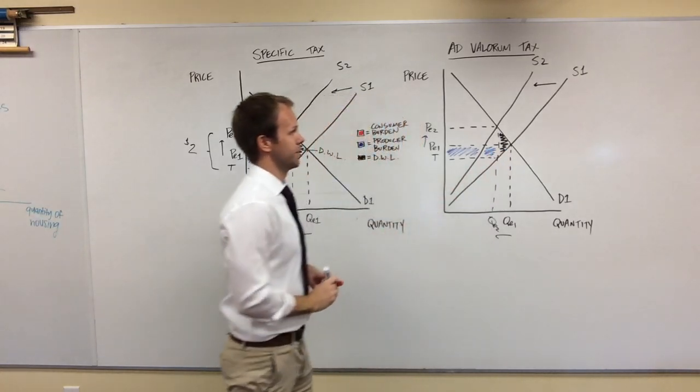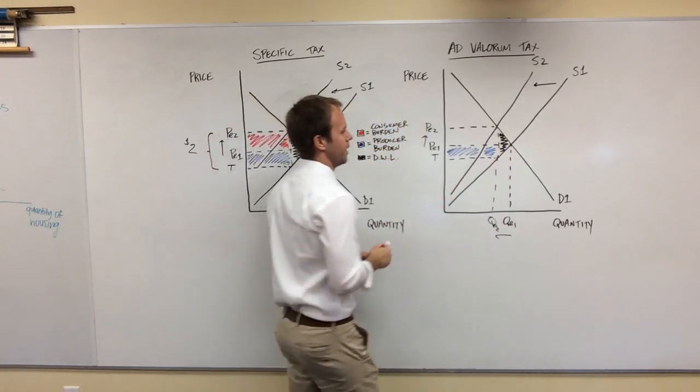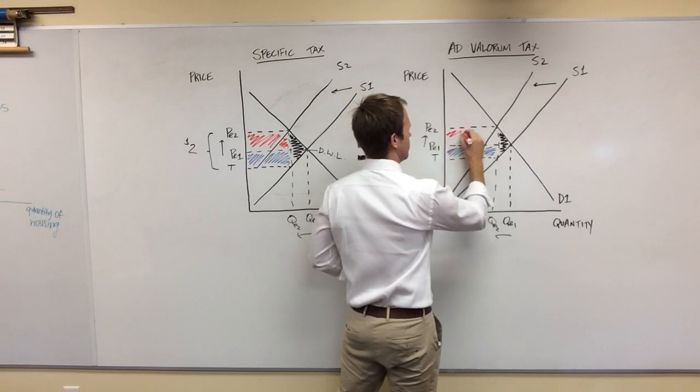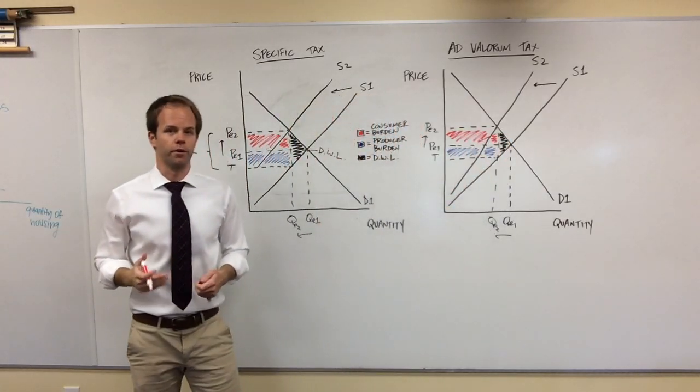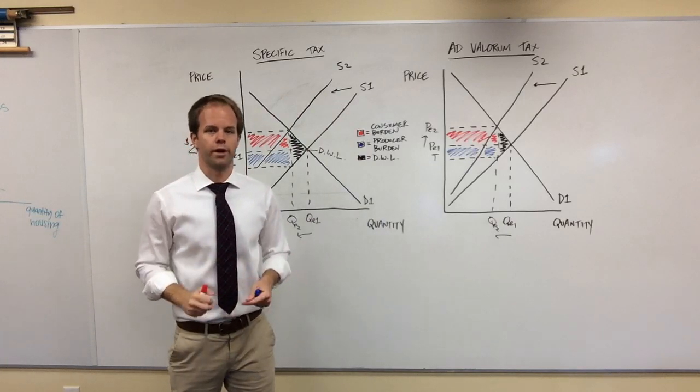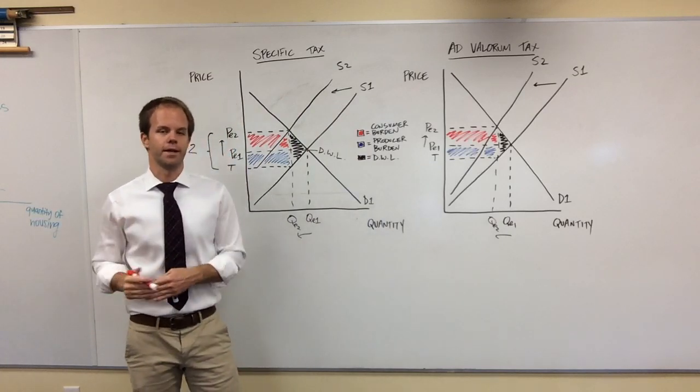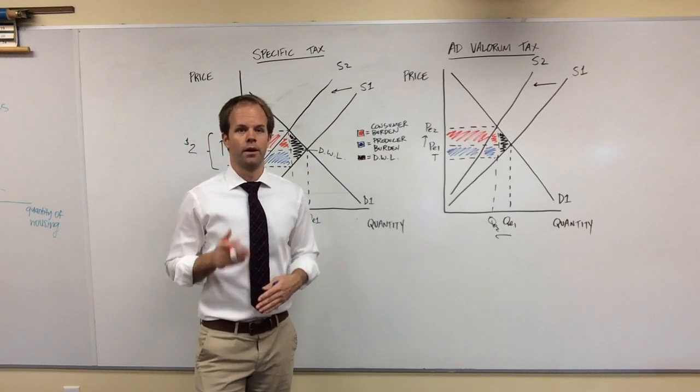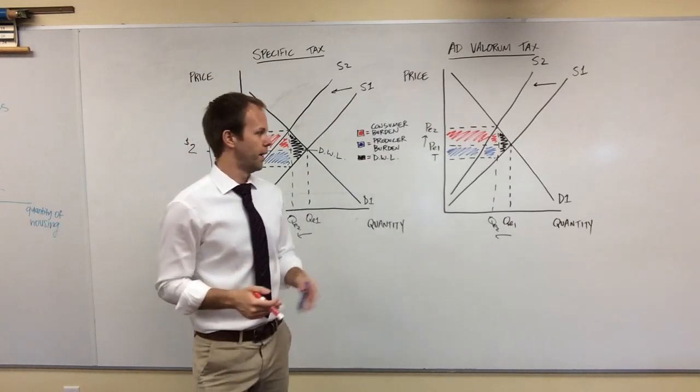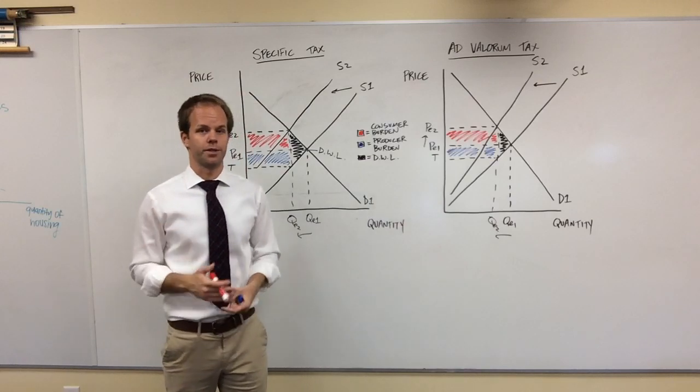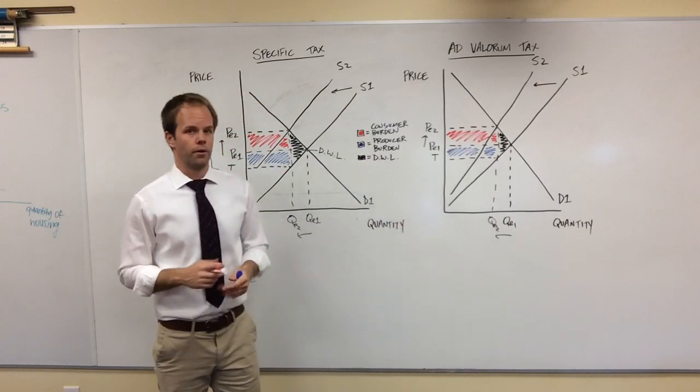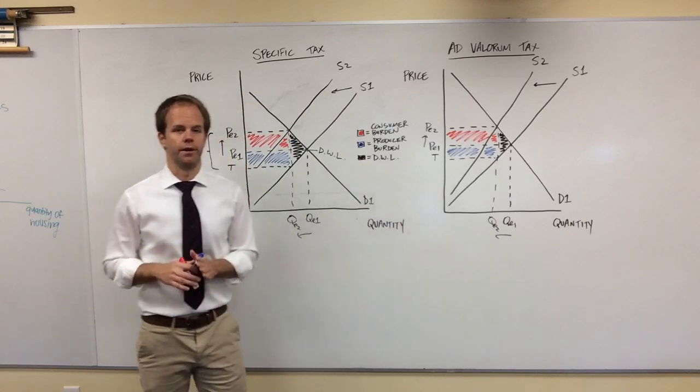So ad valorem taxes, the basic point here is, ad valorem taxes put more of a burden on the consumer. Usually ad valorem taxes are used to try to disincentivize the consumption of a good. So the more you buy, the more tax you pay, not only as a percentage, but also in a total amount. Okay? So that's the basic idea here.